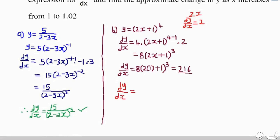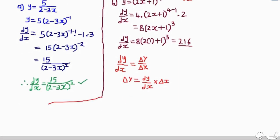So dy/dx equals 216. Since our main interest is to find the approximate change in y, we use the approximation: dy/dx equals change in y over change in x. Making the change in y the subject gives: change in y equals dy/dx multiplied by change in x. We replace dy/dx with 216.